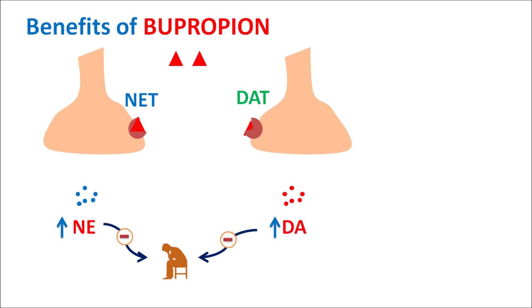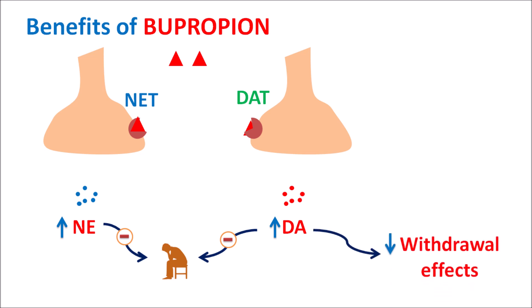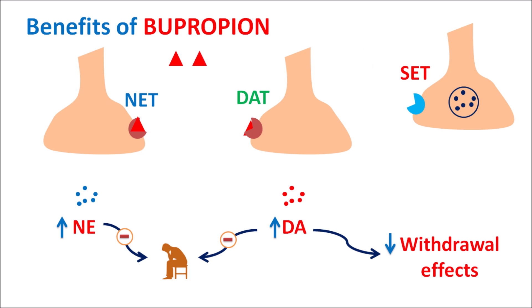The increased levels of dopamine can also reduce the withdrawal effects associated with cessation of smoking. Another neurotransmitter within the CNS associated with depression is 5-HT (serotonin). Bupropion does not act on the serotonin transporter, so it does not increase 5-HT levels within the CNS — this is somewhat different from typical antidepressants.